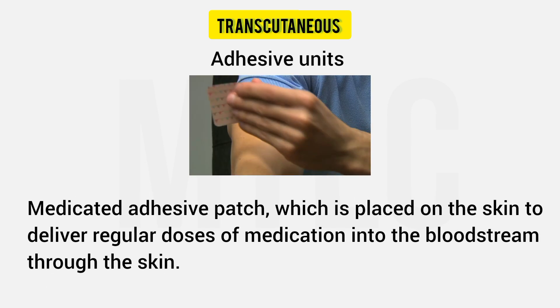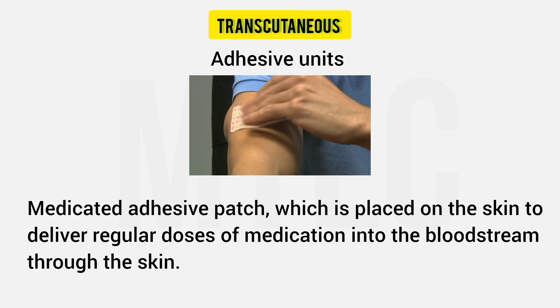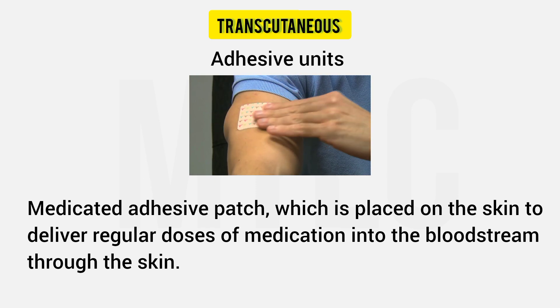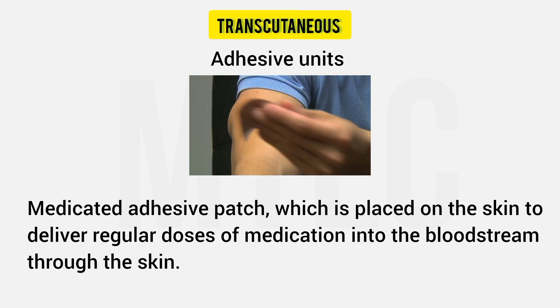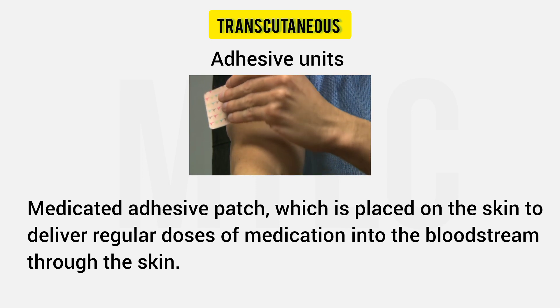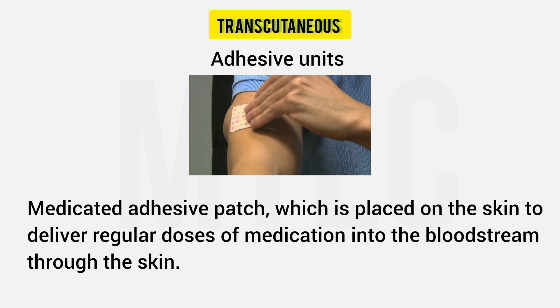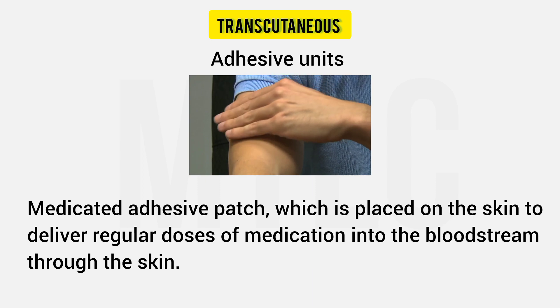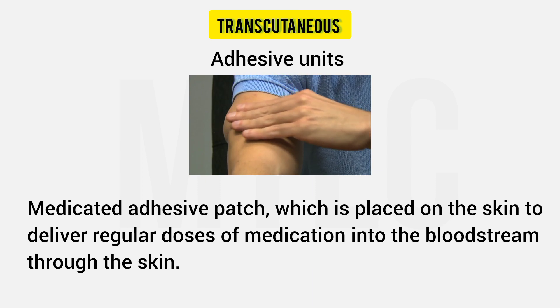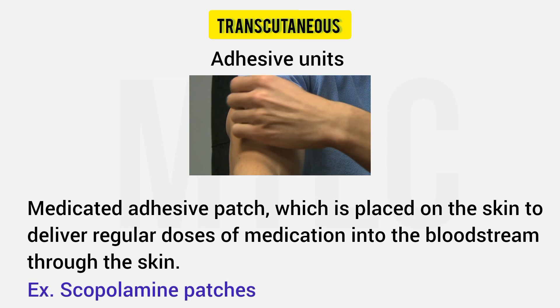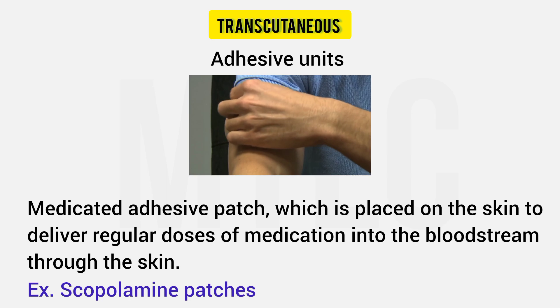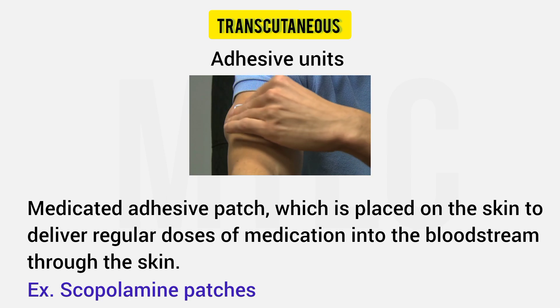Adhesive units use the transdermal drug delivery system — patches are available. Scopolamine patches are an example, used for motion sickness. This is a transdermal adhesive unit delivery system.